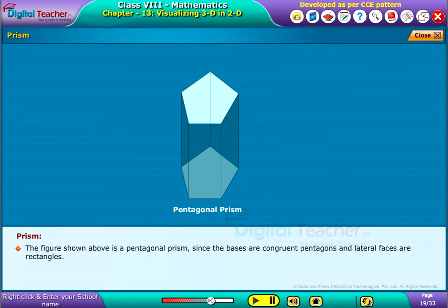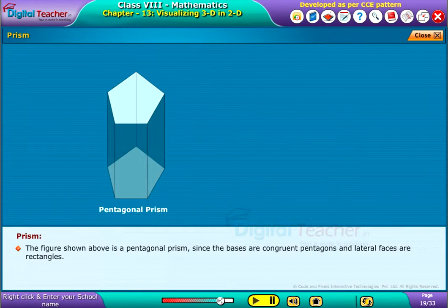The figure shown above is a pentagonal prism, since the bases are congruent pentagons and lateral faces are rectangles.